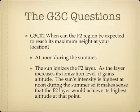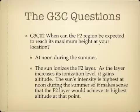When can the F2 region be expected to reach its maximum height at your location? It's expected to reach its maximum height at noon during the summer. The sun ionizes the F2 layer, and as the F2 layer increases its ionization level, it gains altitude. The sun's intensity is highest at noon during the summer, so the F2 layer achieves its highest altitude at that point.